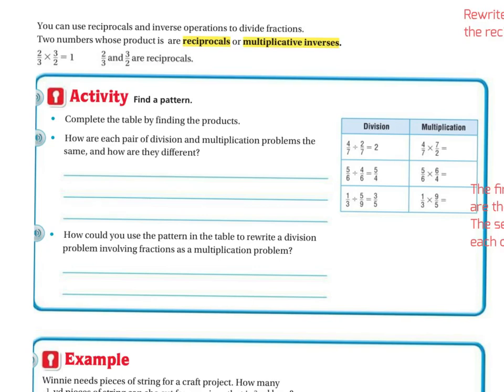Personally, this is my favorite way of doing it, and I know parents will probably recognize this as well. When I was taught to divide, we used reciprocals and inverse operations to divide the fractions. So two numbers whose product are reciprocals or multiplicative inverses. So for example, two thirds times three halves equals one. So two thirds and three halves are reciprocals.